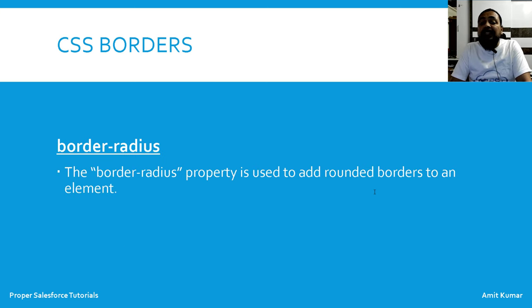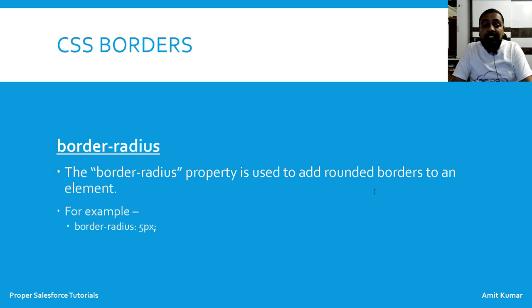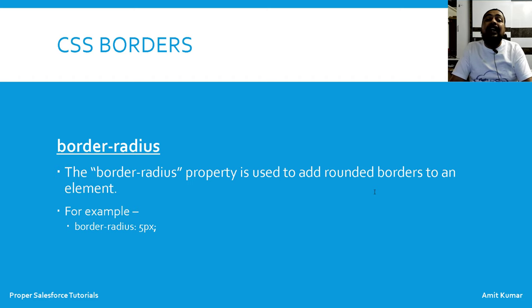The border-radius property is used to add rounded borders to an element. For example, border-radius: 5px will create a rounded rectangular border.